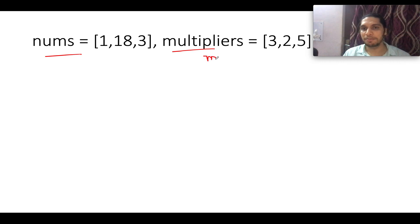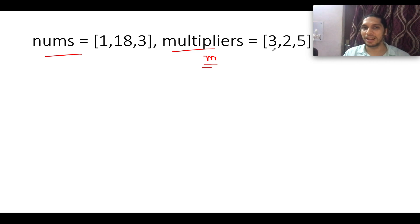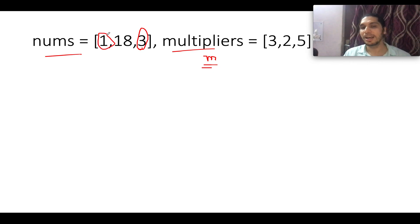With each operation, you select an element from the multiplier array and multiply it with either the leftmost index or the rightmost index in nums. After performing m operations — one for each element in the multiplier array — you need to report the maximum score that could be generated.